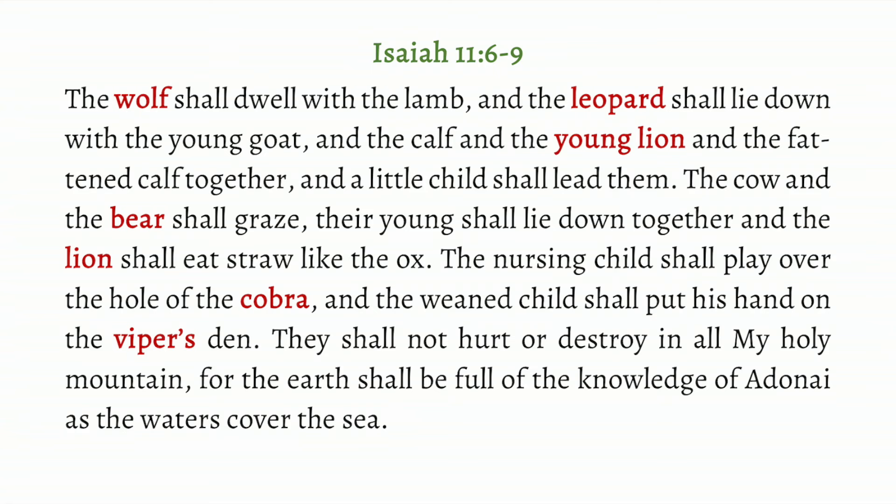So how does God eliminate evil beasts from the land? Does He do it by removing the animals completely? No. He does it by transforming them from evil beasts into tame, kind beasts — so kind and tame that a child can lead the lion, play on the hole of the cobra, and the wolf can lie down with the lamb. He eliminates the evil beasts by transforming them into creatures that are no longer ra'ah, no longer damaging and harmful. This is a very important key to understanding how God destroys those things that are destructive.